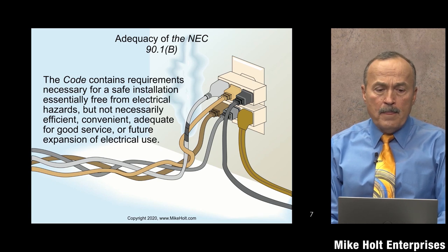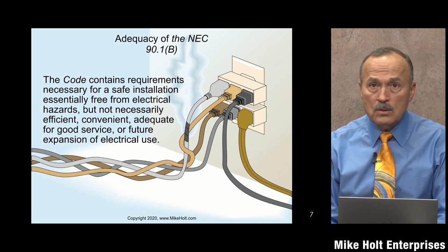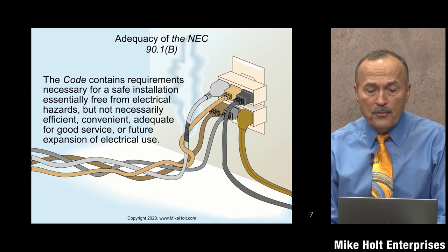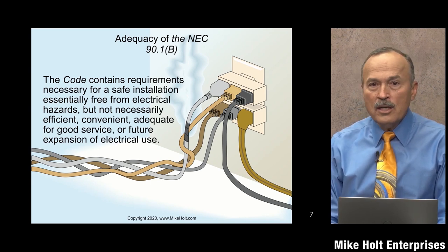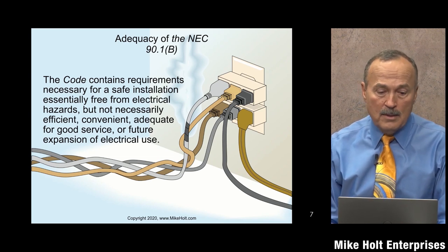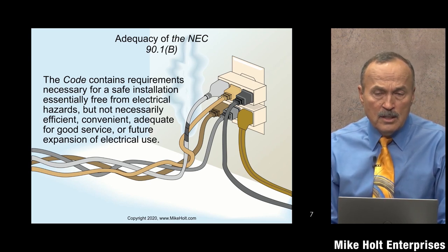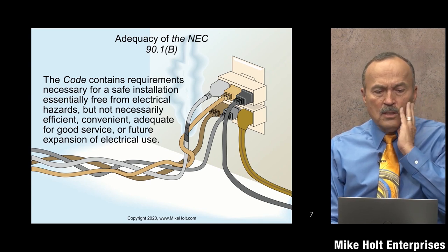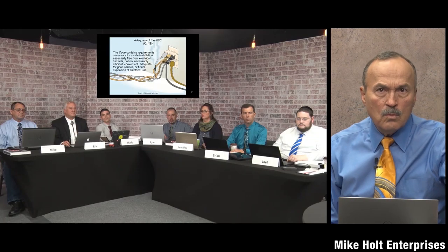Moving on to adequacy: the code contains requirements necessary for a safe installation that is essentially free from electrical hazards. 'Essentially free' is like saying you can take a plane across the ocean and essentially you should make it — that doesn't mean planes don't go down. The code is also not necessarily for efficiency, convenience, adequate service, or future expansion of electrical circuits.